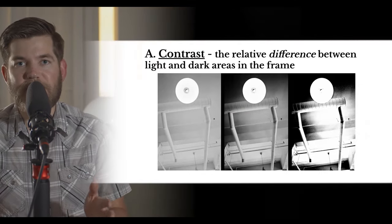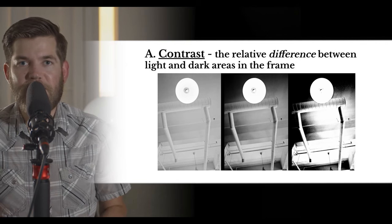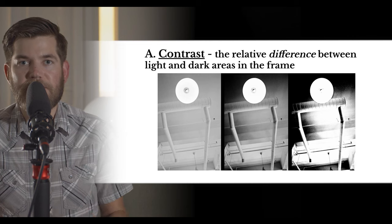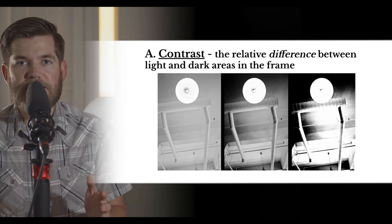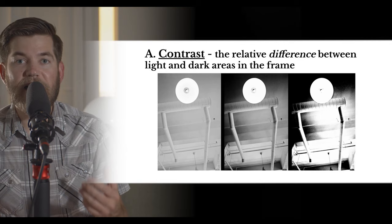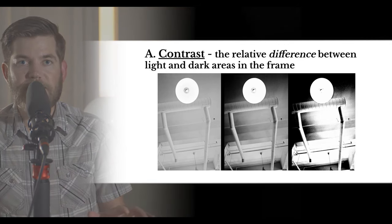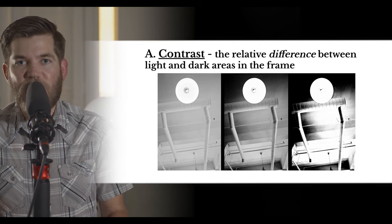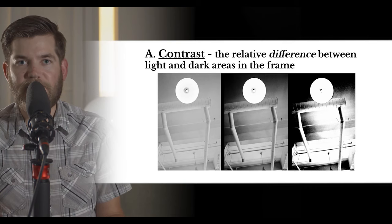First up we have the idea of contrast. These three images are photos of the same image but manipulated in different ways. The image on the far left is low contrast, the middle is medium contrast, and the far right is high contrast. Contrast is the relative difference between light areas and dark areas in the frame. Spotting the difference makes it easier to identify contrast differences within film.